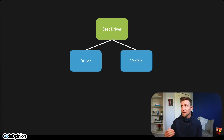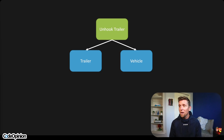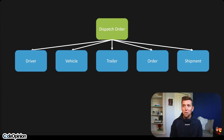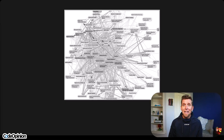Take 'seat driver' as an example — yes, that involves a driver and a vehicle. You have 'unhook trailer,' which involves a trailer and a vehicle. Dispatching an order involves a driver, a vehicle, a trailer, the order, and the shipment you're creating. With DRY, that means not repeating those business capabilities — it does not mean not repeating entities. Because if you apply DRY to entities, that's how you can end up with a rat's nest.